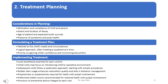Treatment planning. Considerations in planning include: motivation and compliance of child and parent, extent and location of decay, age of patient and expected tooth survival, and presence of symptoms and pulp health. Formulating a treatment plan tailored to the needs and circumstances involves a logical approach, often treating a quadrant at a time, with priority on gaining the child's confidence and minimizing discomfort. Implementation: local anesthesia is essential for pain control. Initial visits may focus on introducing the child to the operative environment, with subsequent visits following a systematic approach starting with simple procedures. Rubber dam usage enhances restoration quality and aids in behavior management. Pulpotomies or pulpectomies are required for teeth with pulpal involvement, and preformed metal crowns are recommended for restored teeth with pulpal involvement.